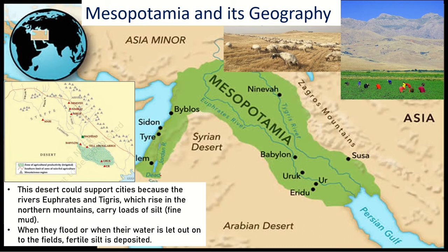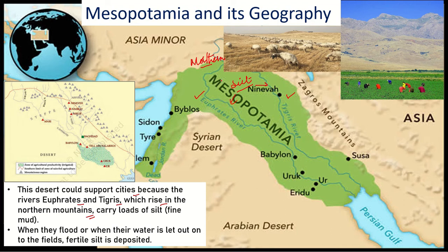This desert region could support the cities because both the Euphrates and the Tigris are flowing here, and they both rise in the northern mountains. These two rivers starting in the northern part of the mountains carry along with them large loads of silt, transporting it from the northern part down to the southern part.